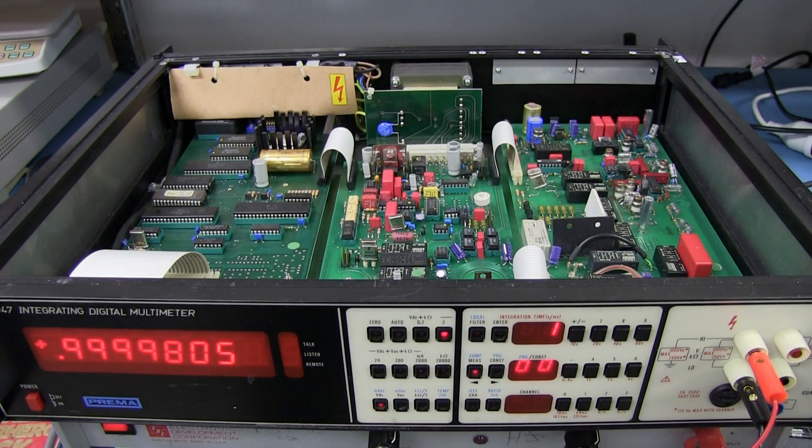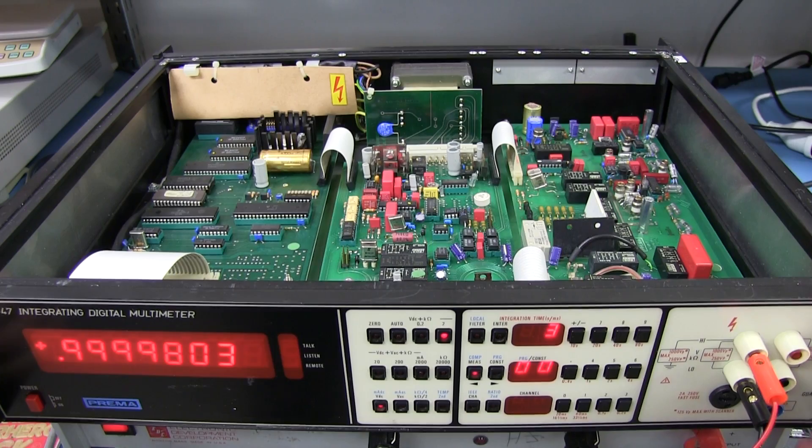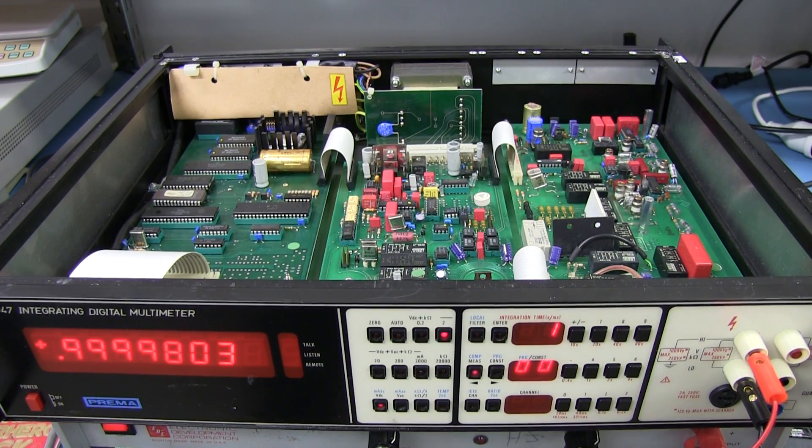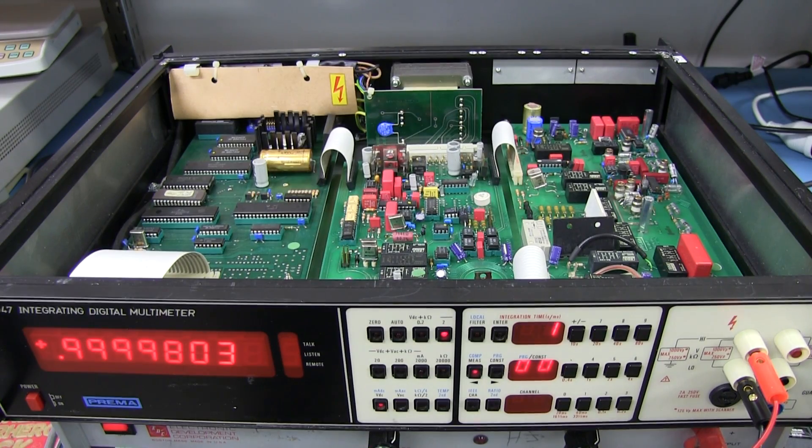Hi, just a quick follow-up video on this Prima 6047 classic 1989 vintage, 7 and a half digit precision multimeter. It's a metrology grade one, really expensive for its day, sort of top of the line. If you haven't seen the previous video, the teardown and a bit of playing around, I'll link that down below.